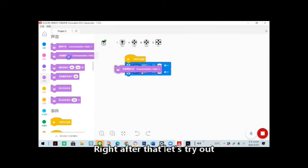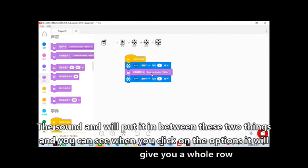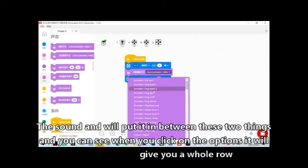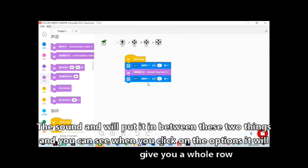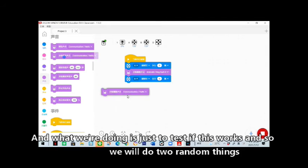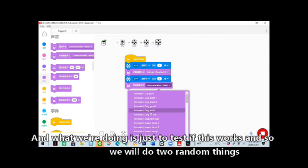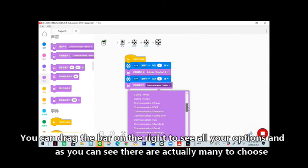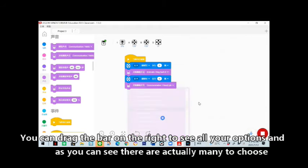Right after that, let's try out the sound and we'll put it in between these two things. You can see when you click on the options it will give you a whole row. What we're doing is just to test if this works, so we will do two random things. You can drag the bar on the right to see all your options, and as you can see there are actually many to choose from.